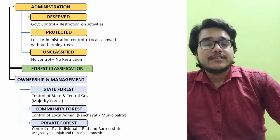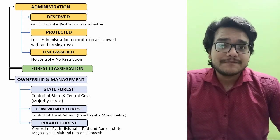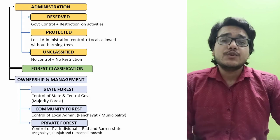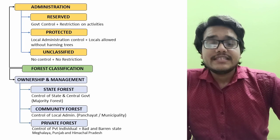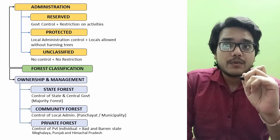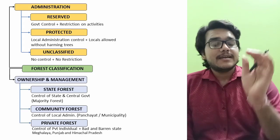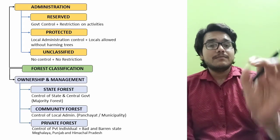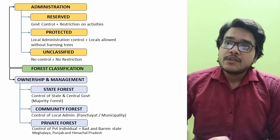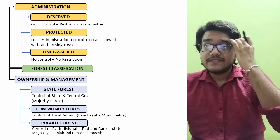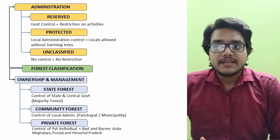The third category is unclassified forest. In unclassified forest, there is no restriction on any activity — whether you cut trees, do lumbering, or pasture animals. This covers the classification of forest on the basis of both administration and ownership and management.